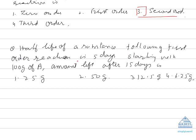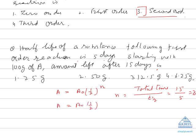For a substance following first-order kinetics with a half-life of 5 days, starting with 100 g, the amount left after 15 days is calculated using: A = A₀ × (½)^n, where n is the number of half-lives (total time divided by half-life). Here n = 15/5 = 3. So the amount left = 100 × (½)³ = 100 × 1/8 = 12.5 grams. The general formula is: amount left after n half-lives = A₀ × (½)^n.